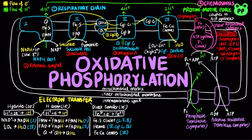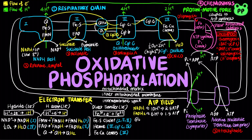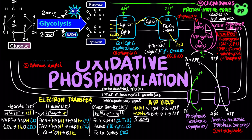Atractyloside inhibits the adenine nucleotide translocase. NADH enters the respiratory chain at complex 1; as a result, a total of 10 protons are pumped out of the mitochondrial matrix per pair of electrons transferred from NADH, driving the synthesis of about 2.5 ATP. On the other hand, FADH2 enters the respiratory chain at complex 2, which only transports about 6 protons out of the mitochondrial matrix, producing about 1.5 ATP.